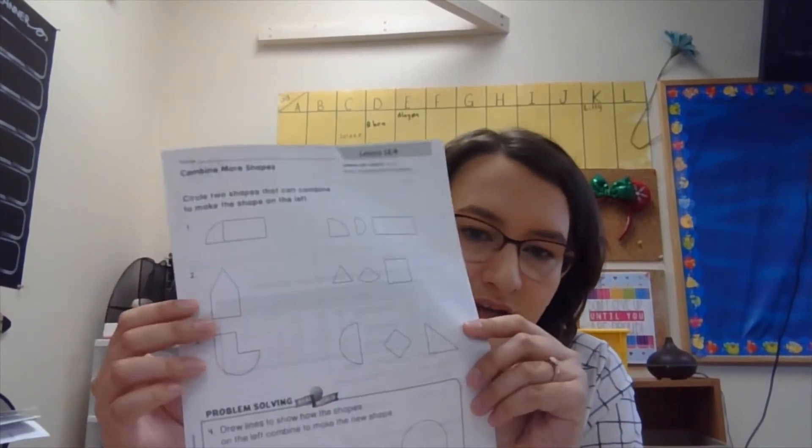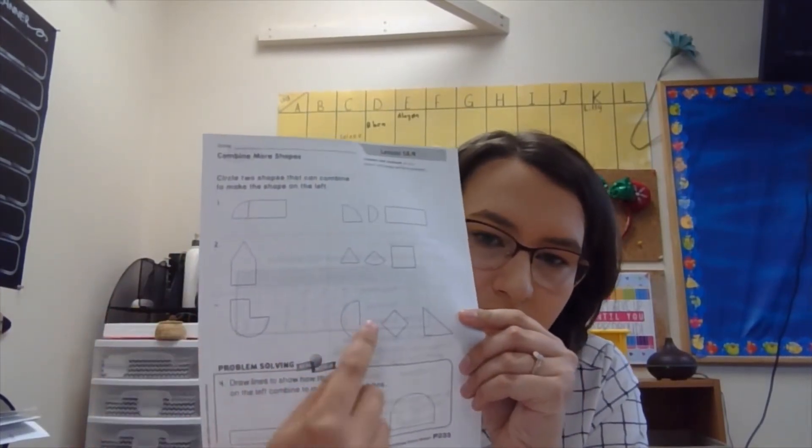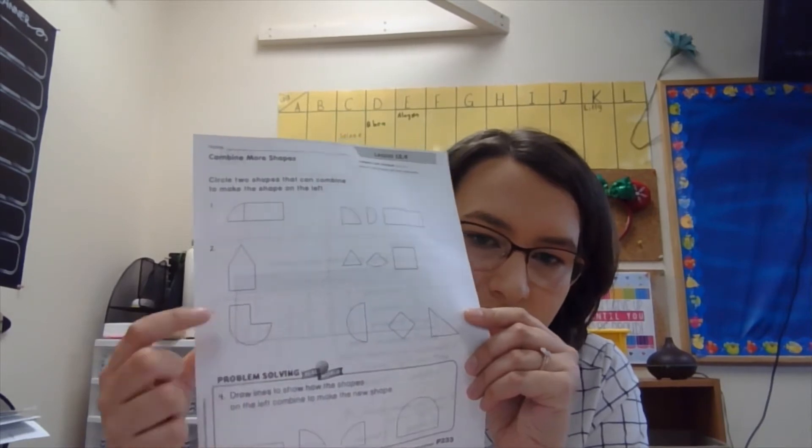The next is this little house looking shape. What two shapes do you see there? Maybe try to draw a line, see if you can identify those shapes. Next, number three, the same thing. Circle the two shapes that you can see. Out of these ones, which ones could combine to make this?